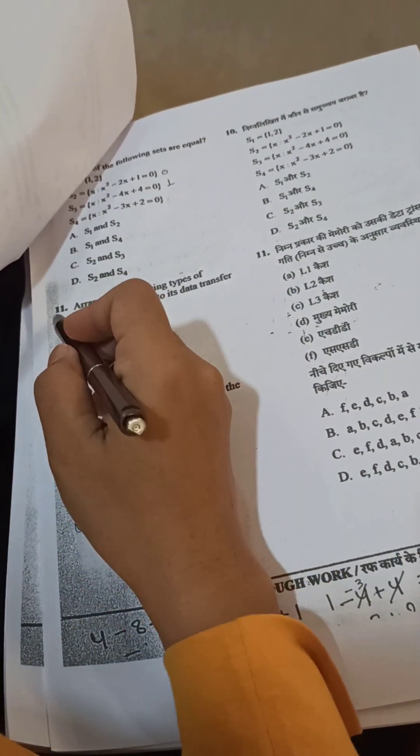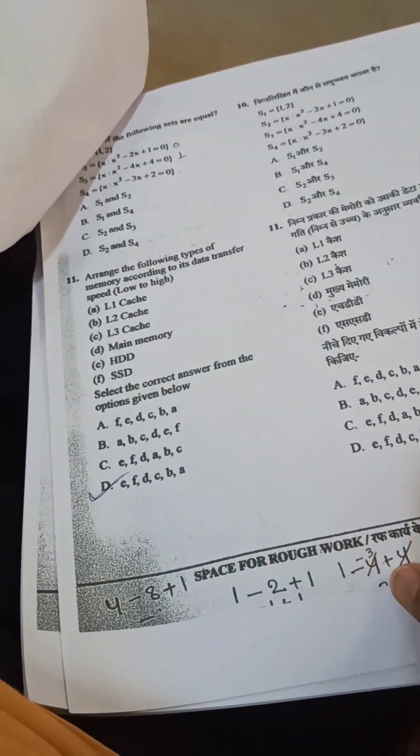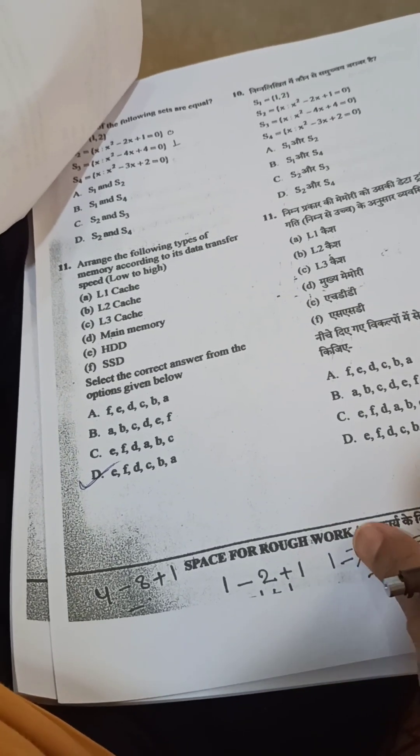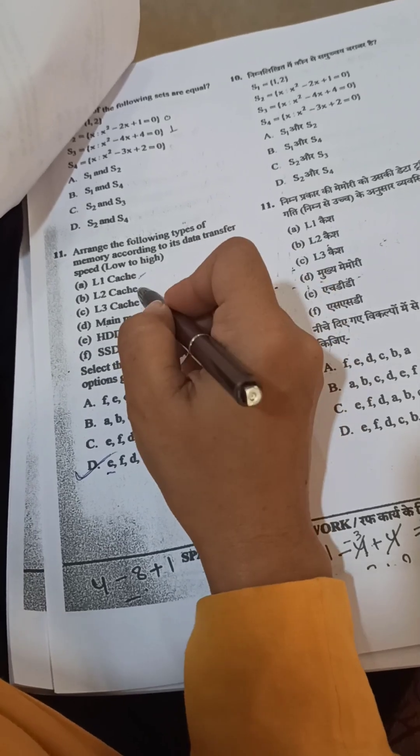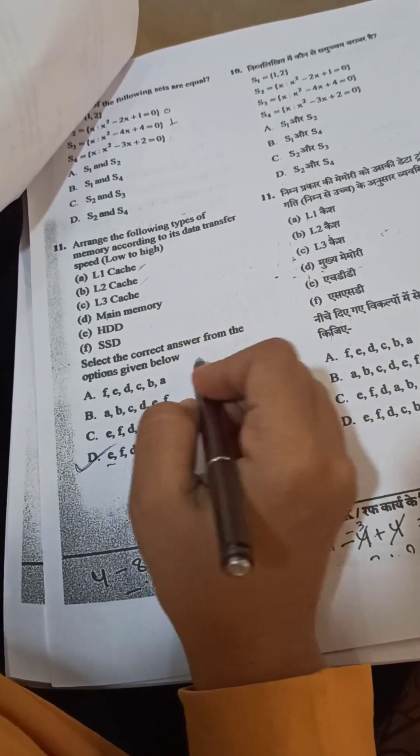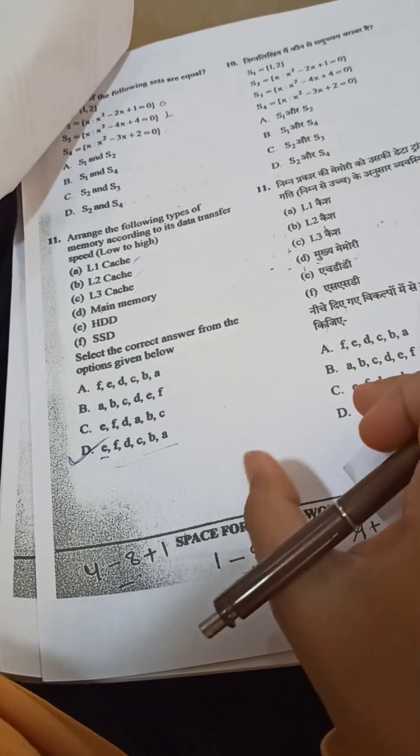Here the question number 11 answer should be option D, because definitely we will start from L1 is the highest one, then L2, then L3. It is given from opposite side. So this one is the correct answer key.